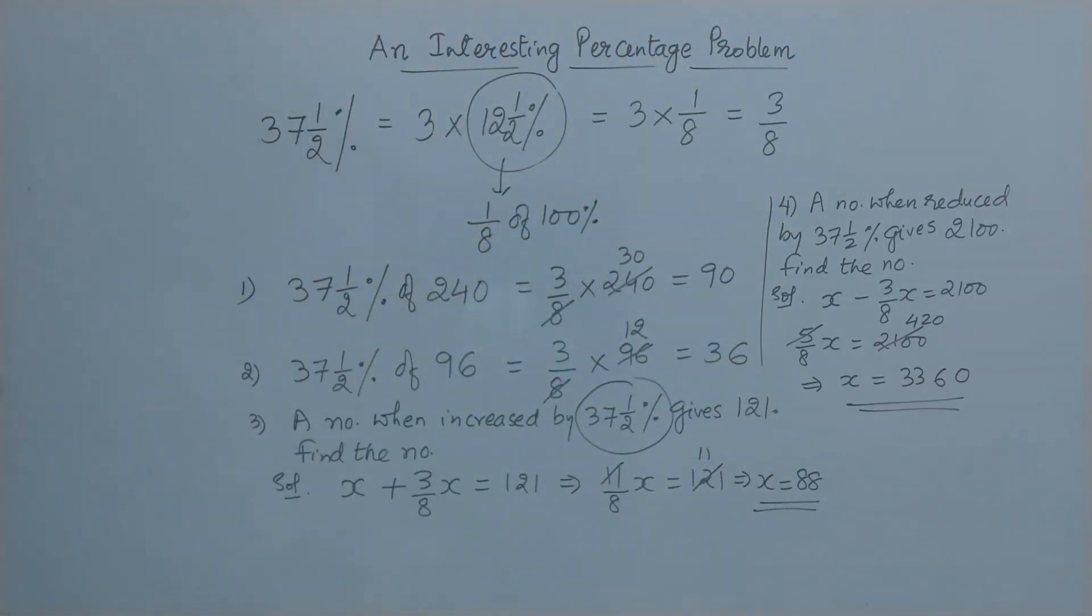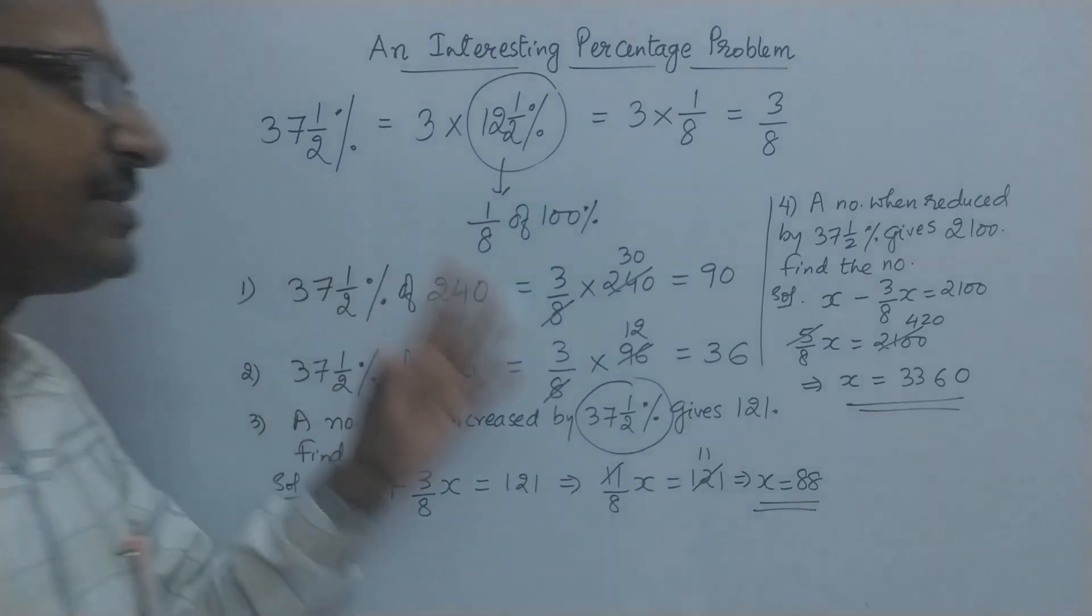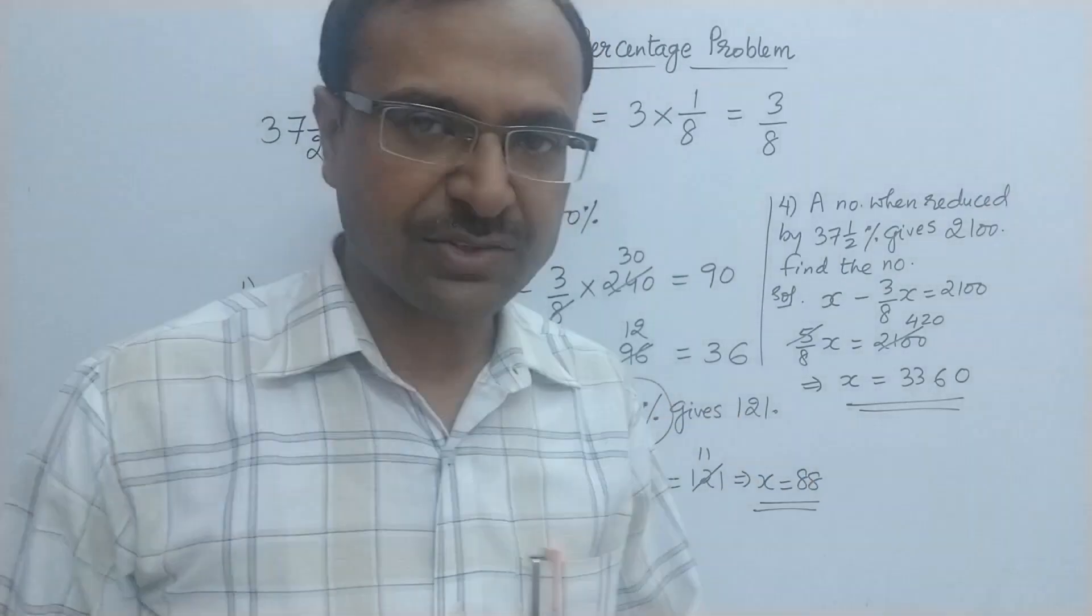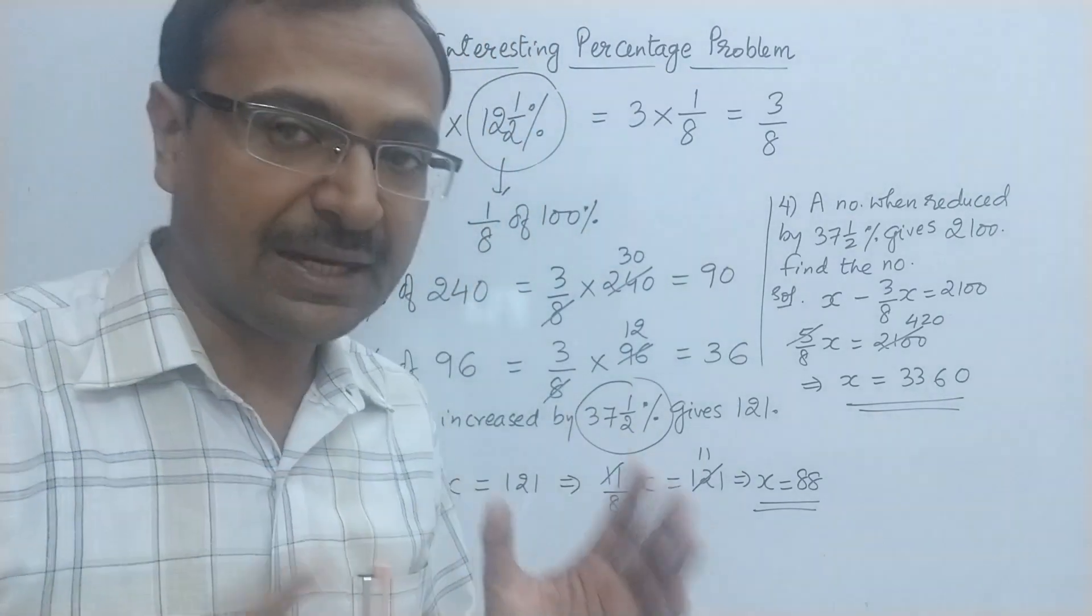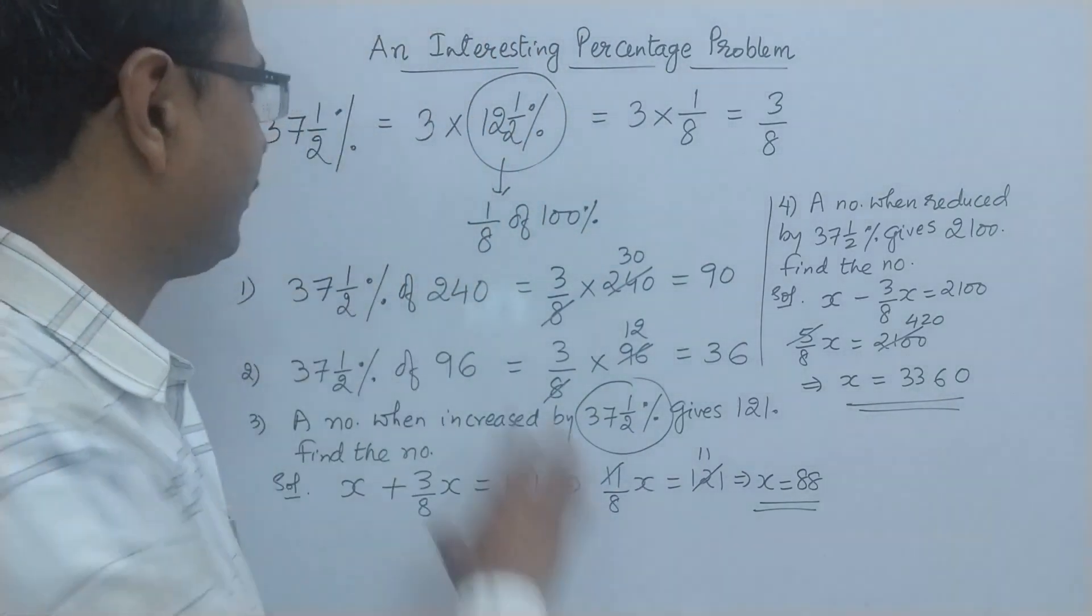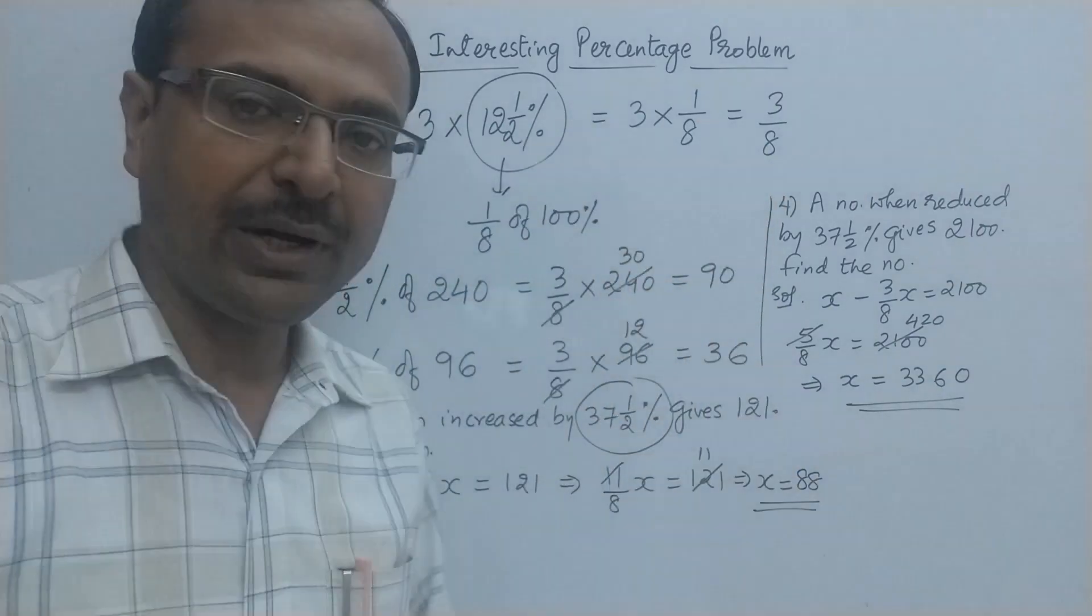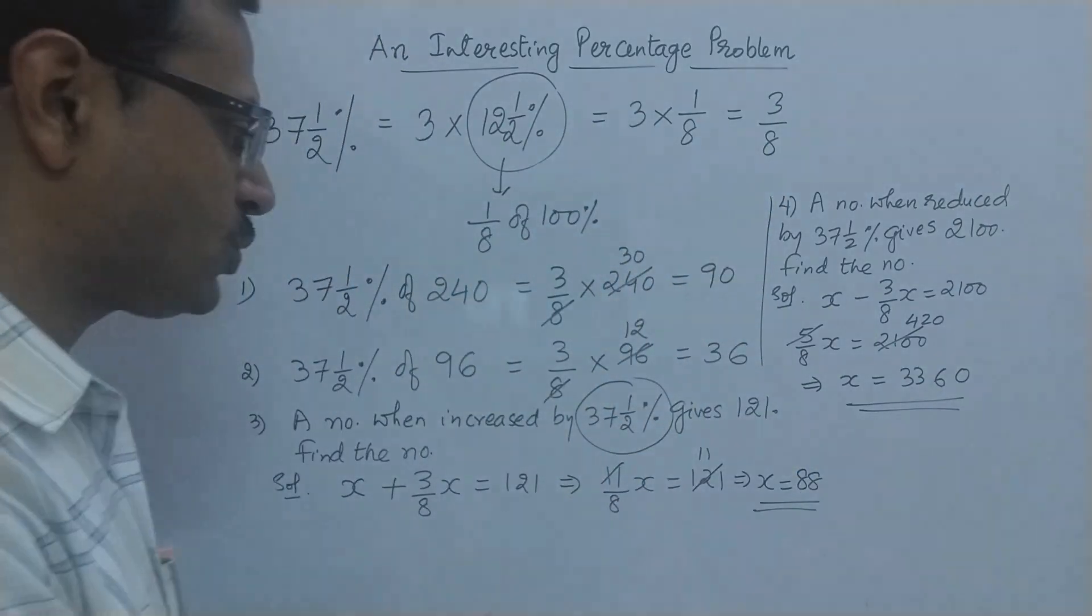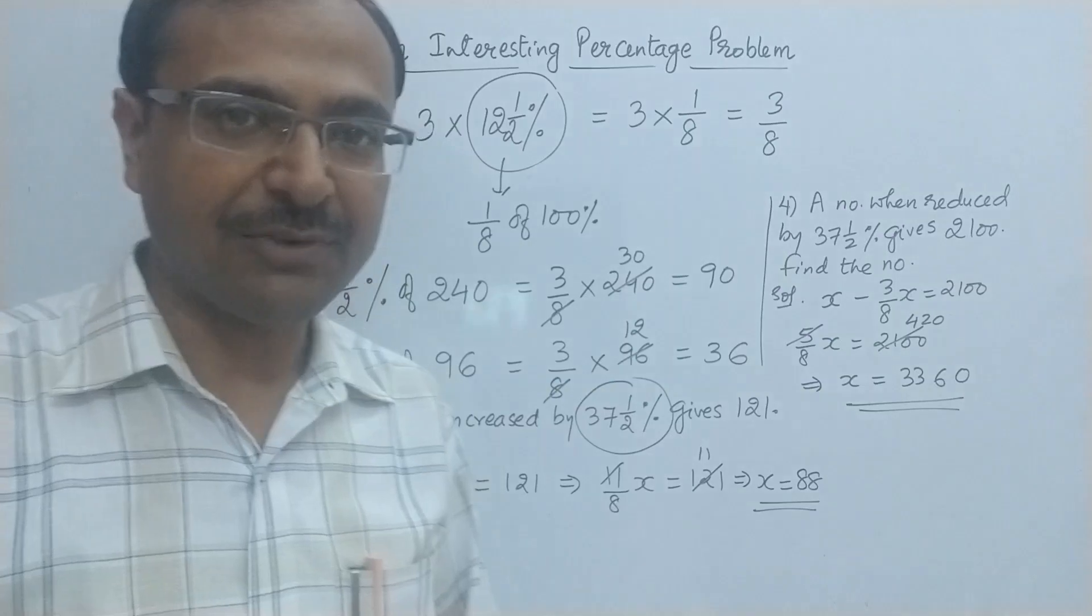So friends, you can see understanding of this percentage, 37.5%, is a must for saving a lot of time in competitions. Otherwise, you will be busy removing the mixed fraction, then removing the percentage sign, and then carrying out the calculation. So if you know directly that it is 3/8, then you can apply that concept to get to the answer very easily and in very short time.